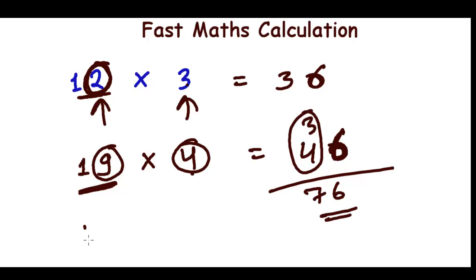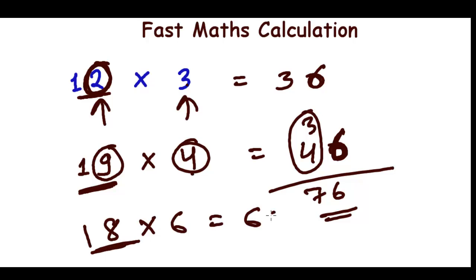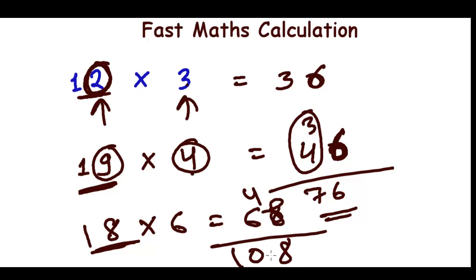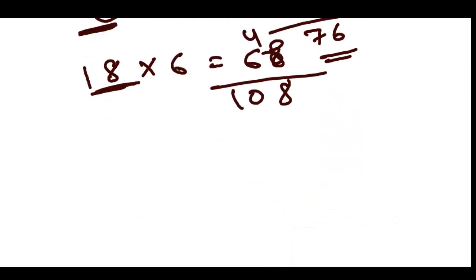Let's try 18 times 6. Imagine 18 as 10, so 10 times 6 is 60. Then 8 times 6 is 48 — that gives us 4 and 8. So it becomes 60 plus 40 is 100, plus 8 — the answer is 108.